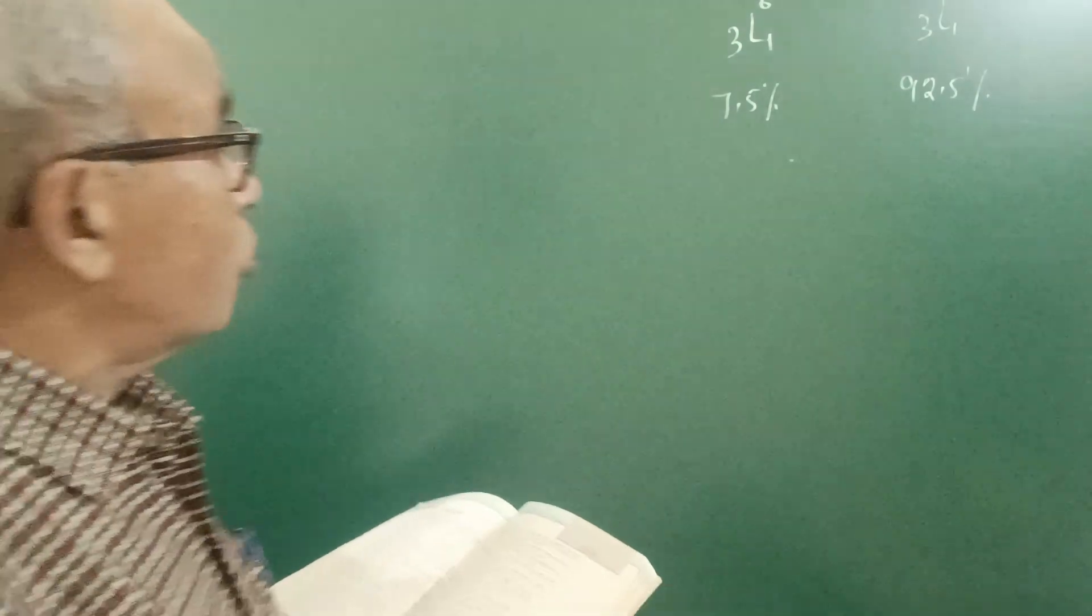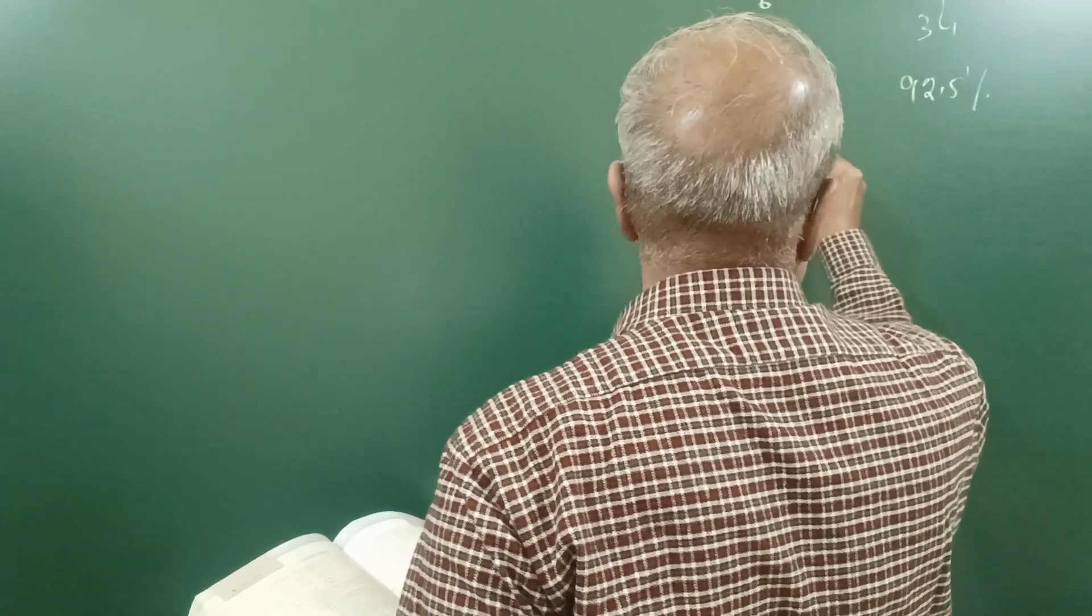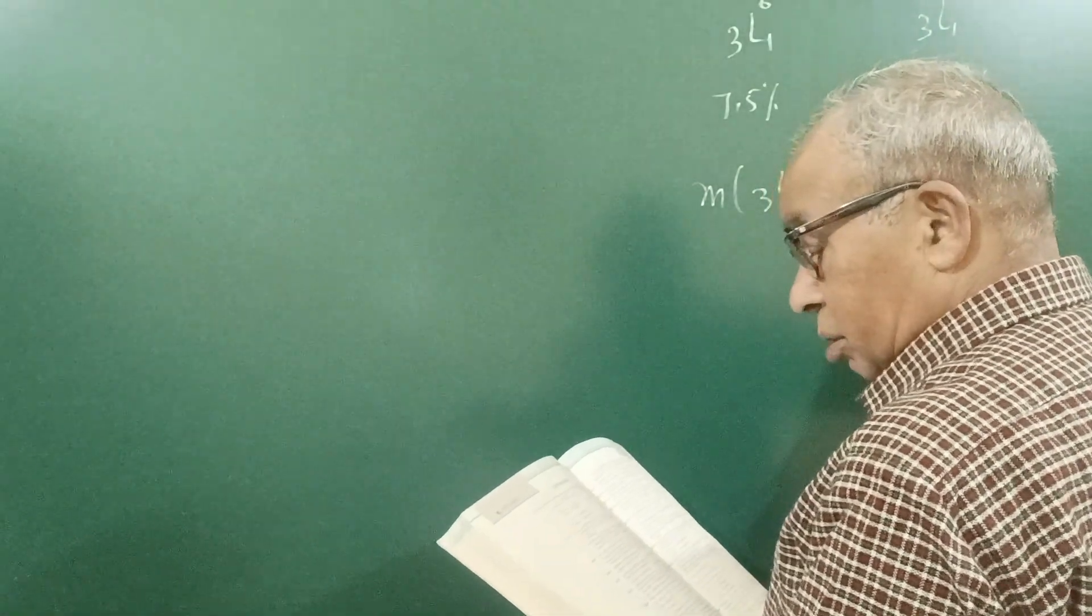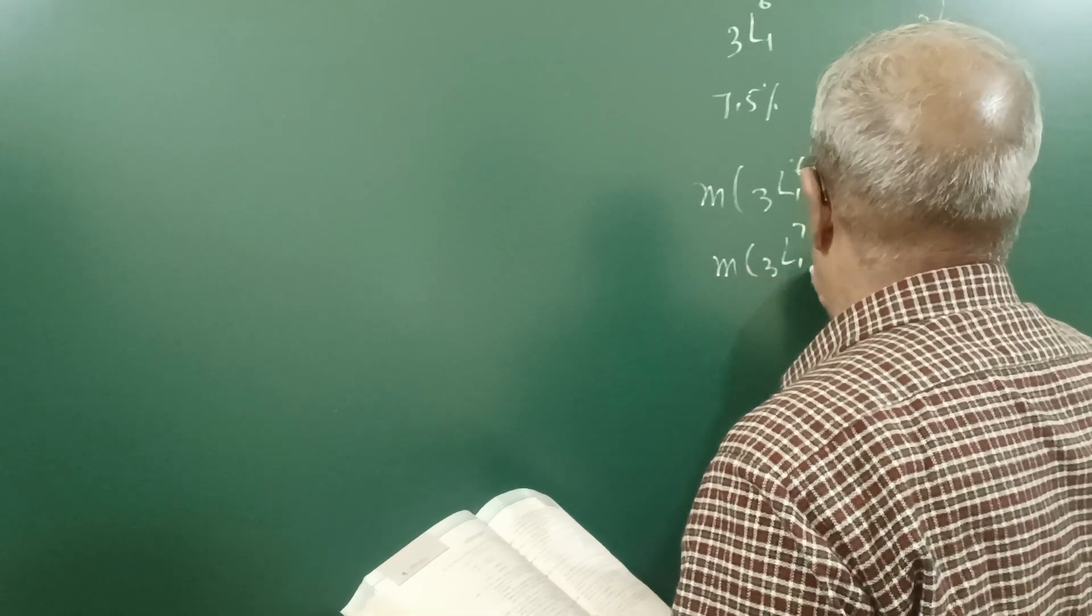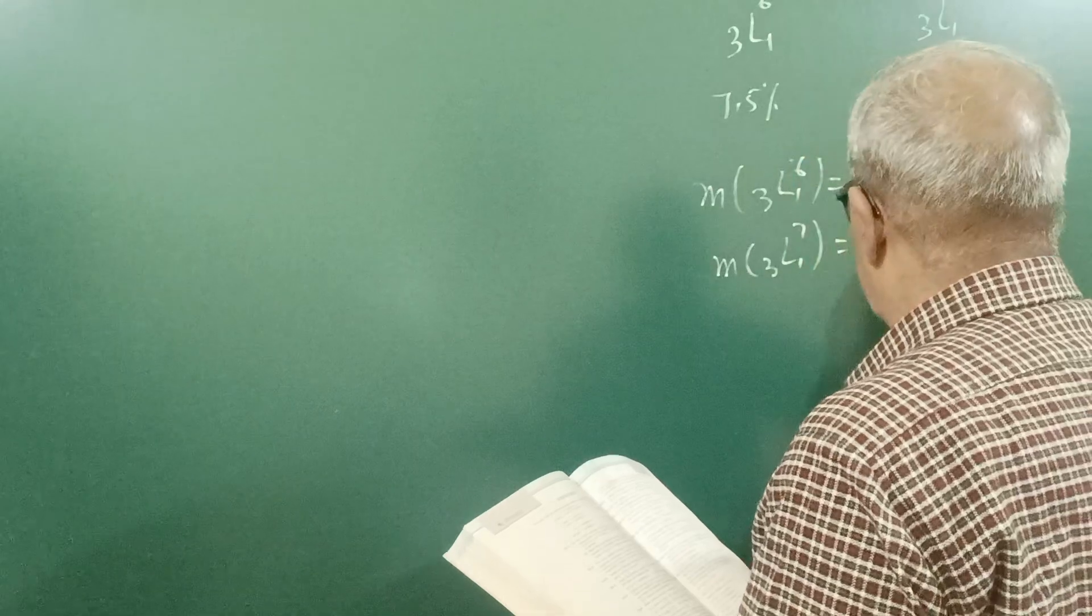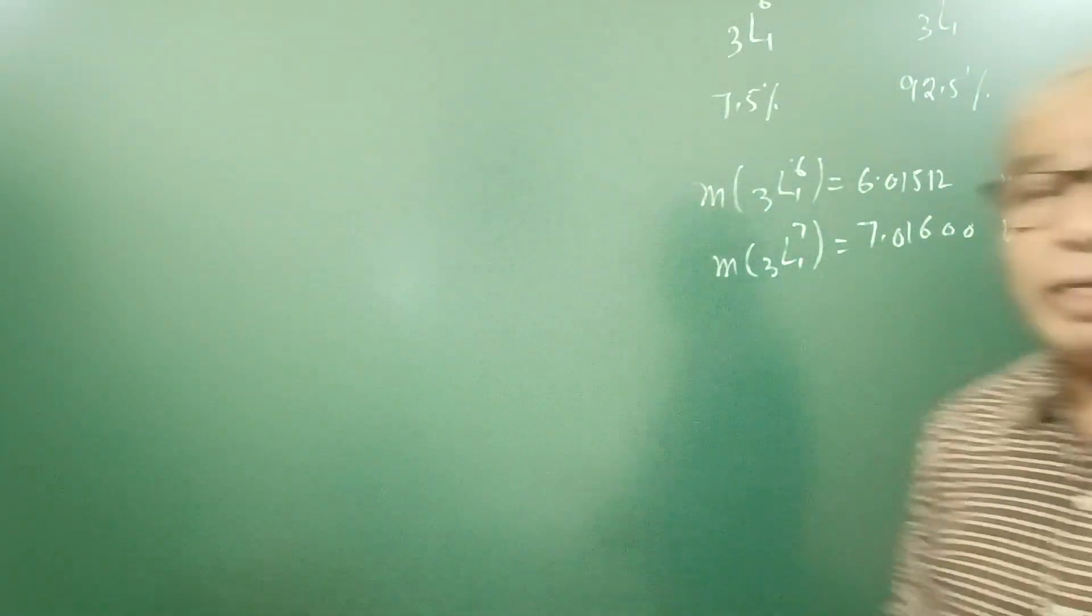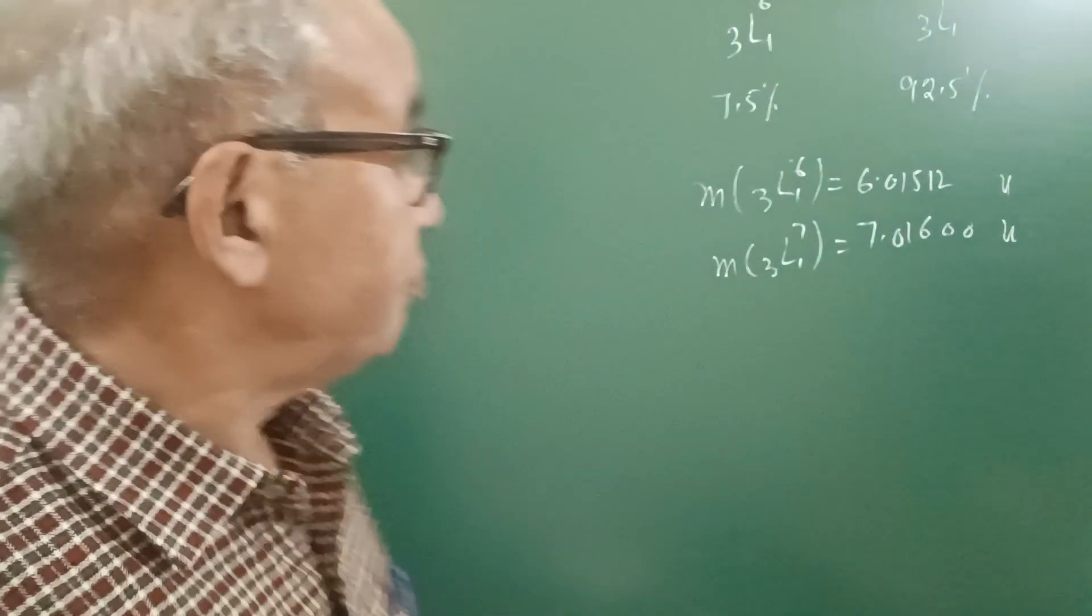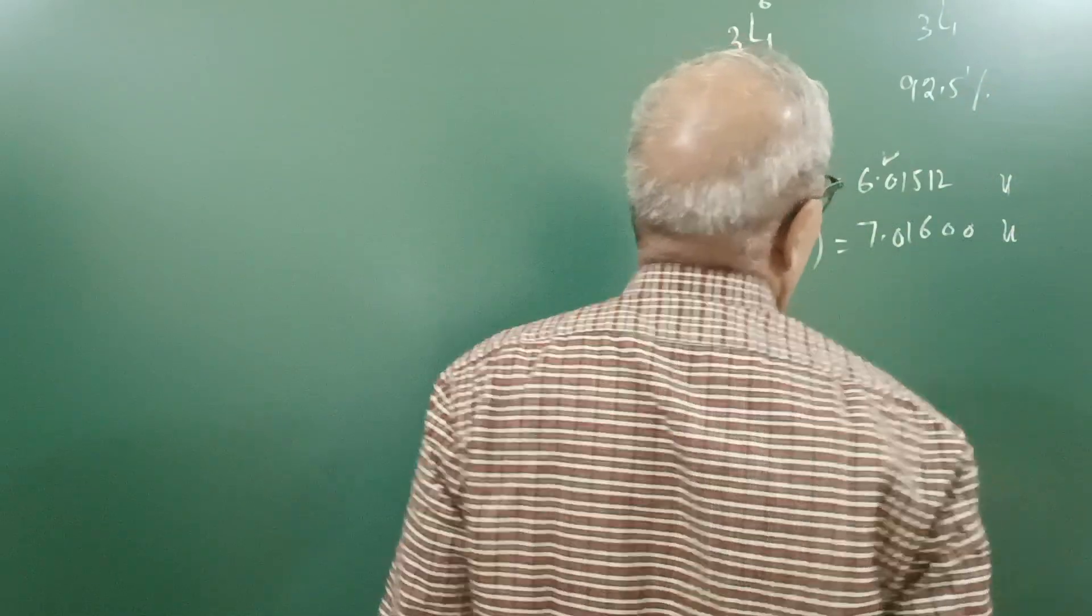This means if we take 100 atoms of lithium, then 7.5% are Li6 and 92.5% are Li7. And it has been measured that mass of 3Li6 is equal to 6.01512U and mass of 3Li7 is equal to 7.01600U atomic mass unit. Out of 100 atoms of lithium, 7.5 atoms have this mass and 92.5 atoms have this mass.